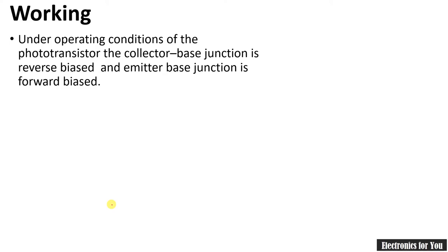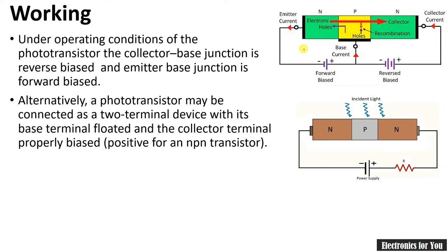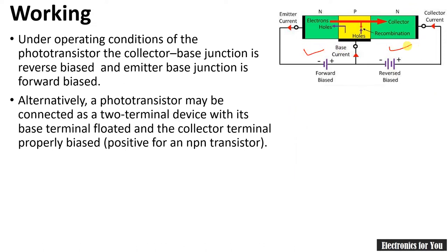Now let's see the working of a photo transistor. When it is a three-terminal device, the collector-base junction is reverse biased and the base-emitter junction is forward biased — just like a normal bipolar NPN transistor. A PNP transistor can also be used; the output should be reverse biased and the input forward biased.